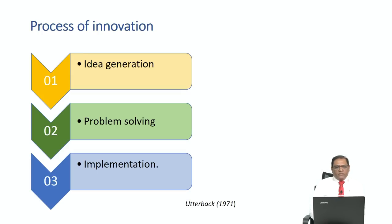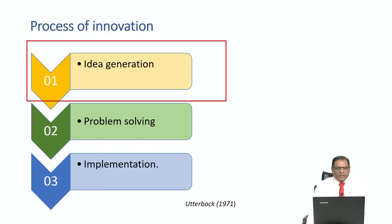The process of innovation takes three steps: idea generation, problem solving, and implementation. In this lecture, I will describe how we can extract ideas from animals in order to create new things. Out of the three steps, step one — idea generation — is the most difficult step. Most of the time we don't have good ideas that can be turned into new innovations.